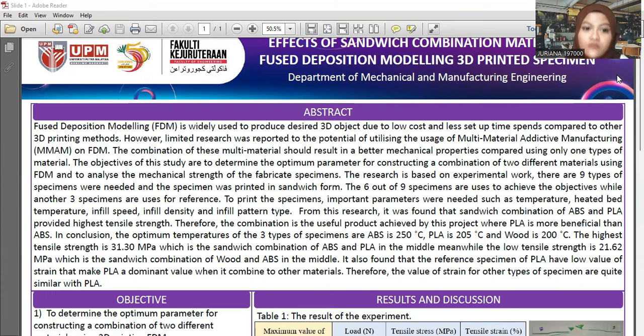The key parameters are temperature, infill speed, infill density, and infill pattern type. From this research, it was found that the sandwich combination of ABS and PLA provides the highest tensile strength. The optimum temperatures of the three specimen types are: ABS at 250°C, PLA at 205°C, and wood at 200°C.